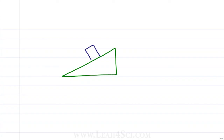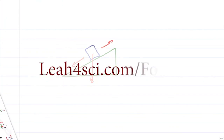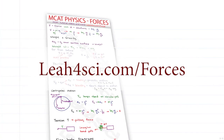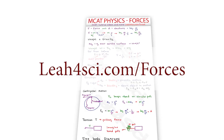What happens if you're given a problem on an inclined plane, where motion is going down the plane, friction acts up the plane, but gravity goes straight down — meaning gravity also opposes friction? That's exactly what we'll cover in the next video, which you can find at leah4sci.com/forces.